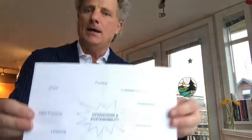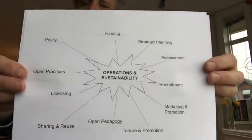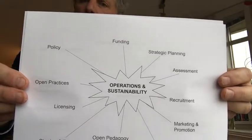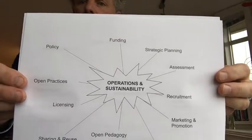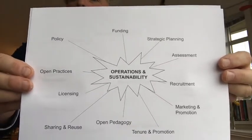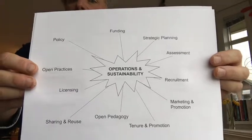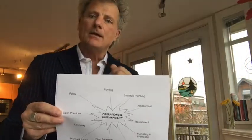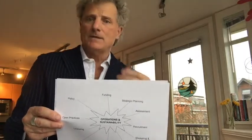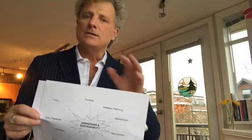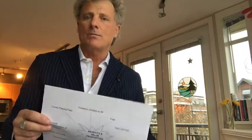The third part of any open education initiative has to do with how it operates and sustains itself. This gets into things like policy, funding, open practices, how you'll actually license things, how you'll share and reuse them in terms of distribution. There's a whole set of things that are the methods and means by which open education is done, and we'll have the opportunity to describe those on our roadmaps.